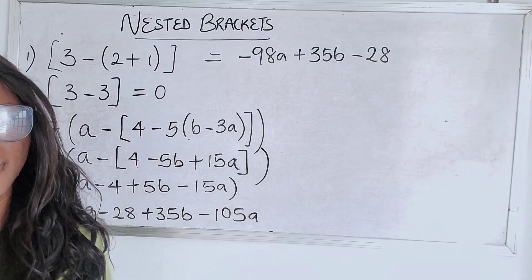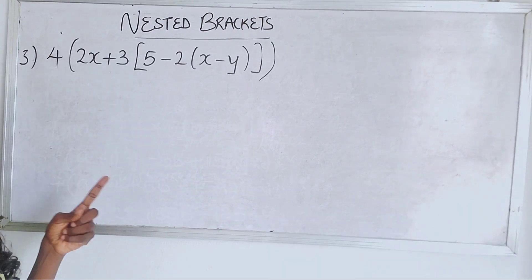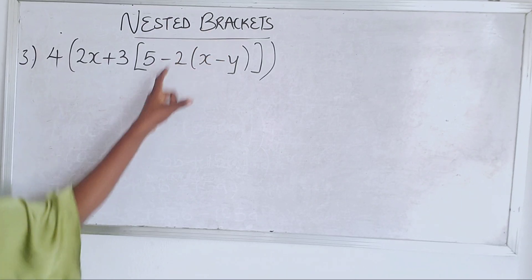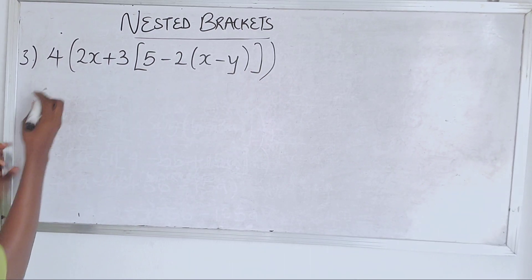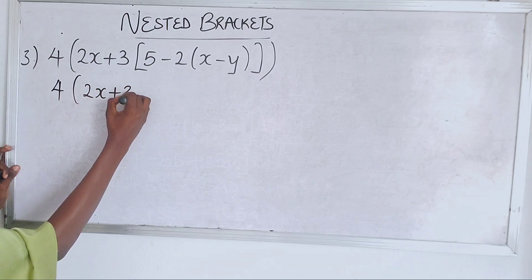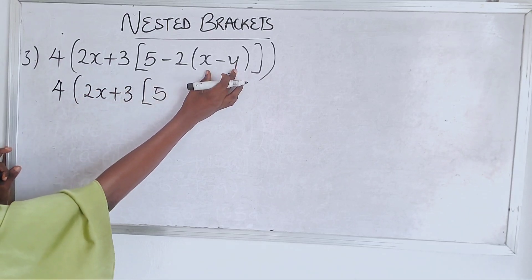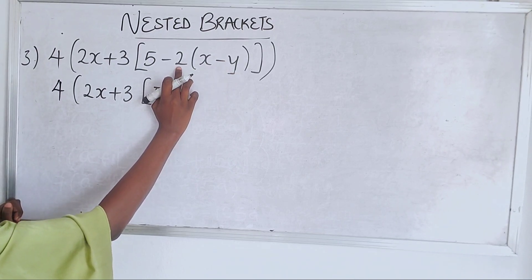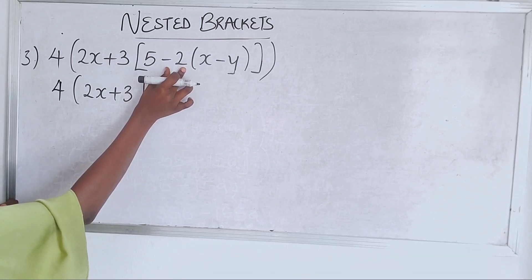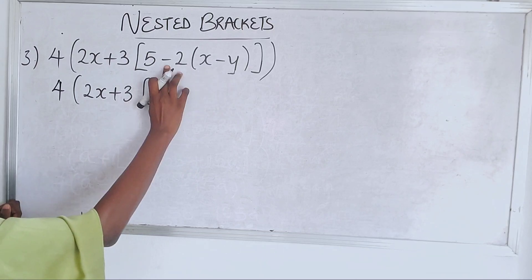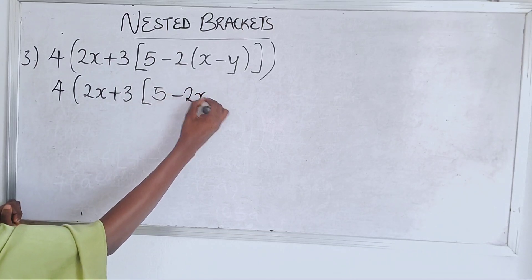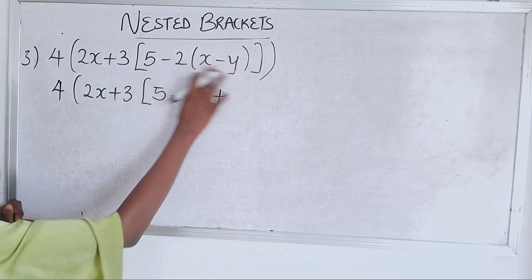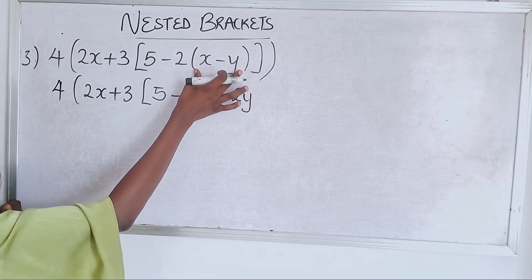Let's solve another example. Always take note of your brackets — once you open one, you have to close it. Our innermost bracket is this one, then we move to the square bracket, then to the outer one. x minus y cannot be solved since they don't look alike, so the closest number to the bracket — which is minus two — will open it. Minus two times x is minus two x; minus two times minus y — minus times minus is plus — gives plus two y. This bracket is done.